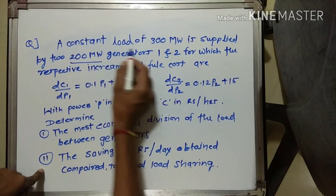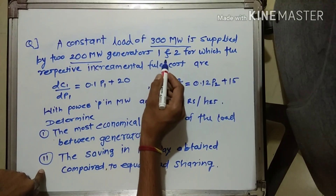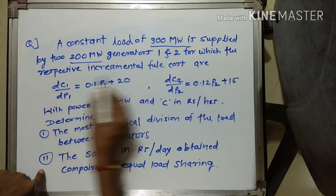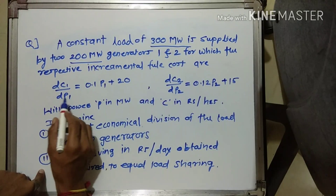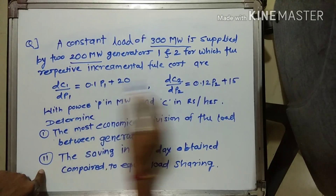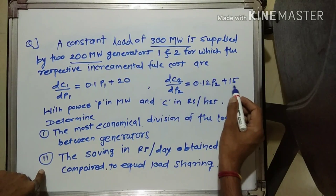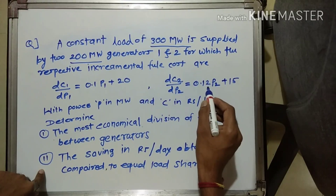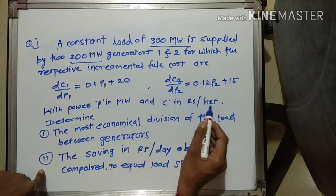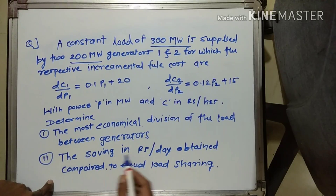The constant load of 300 megawatt is supplied by two 200 megawatt generators. The incremental fuel costs are DC1/DP1 = 0.1P1 + 20 for generator 1, and DC2/DP2 = 0.12P2 + 15 for generator 2, with power P in megawatt and C in rupees per hour. We need to find the most economical division of load and the saving in rupees per day.